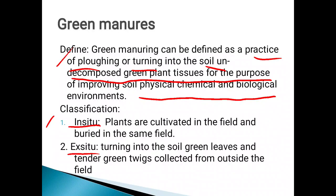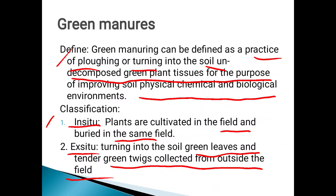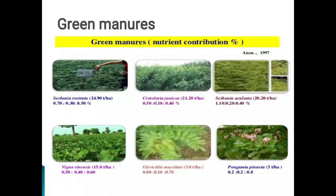In in-situ green manuring, plants are cultivated in the field and buried in the same field. In ex-situ green manuring, green leaves and tender green twigs are collected from outside and incorporated into the soil. Examples of in-situ green manure crops include Sesbania rostata, Daincha, Crotolaria juncea (sun hemp), Vigna sinensis (cowpea), and Pongamia.